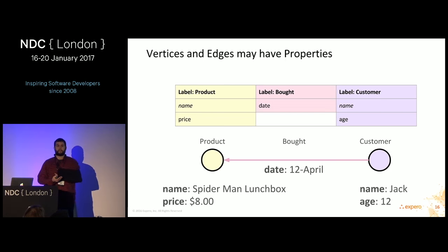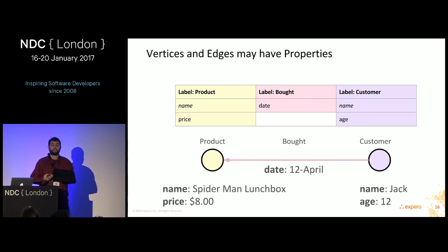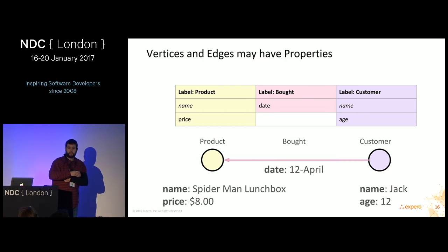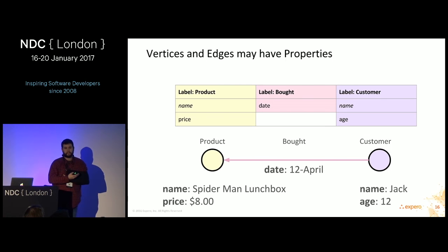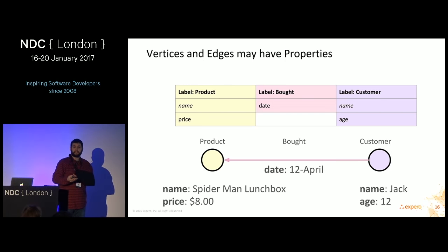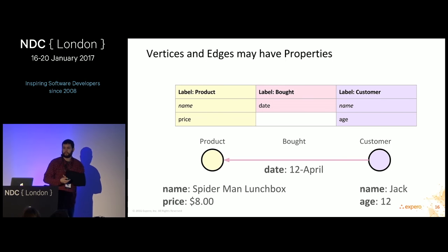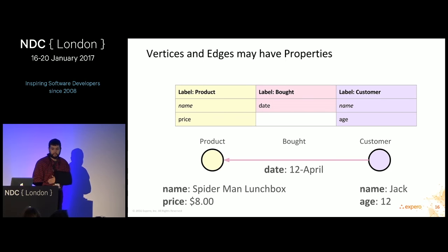In a relational database, you can't put metadata on foreign keys — you end up building a bridge table to store that metadata. In a graph database, relationships are first-class entities and are able to actually have metadata on the relationship itself. That's one of the more powerful things when working with graph databases or migrating data from relational databases to graph databases.